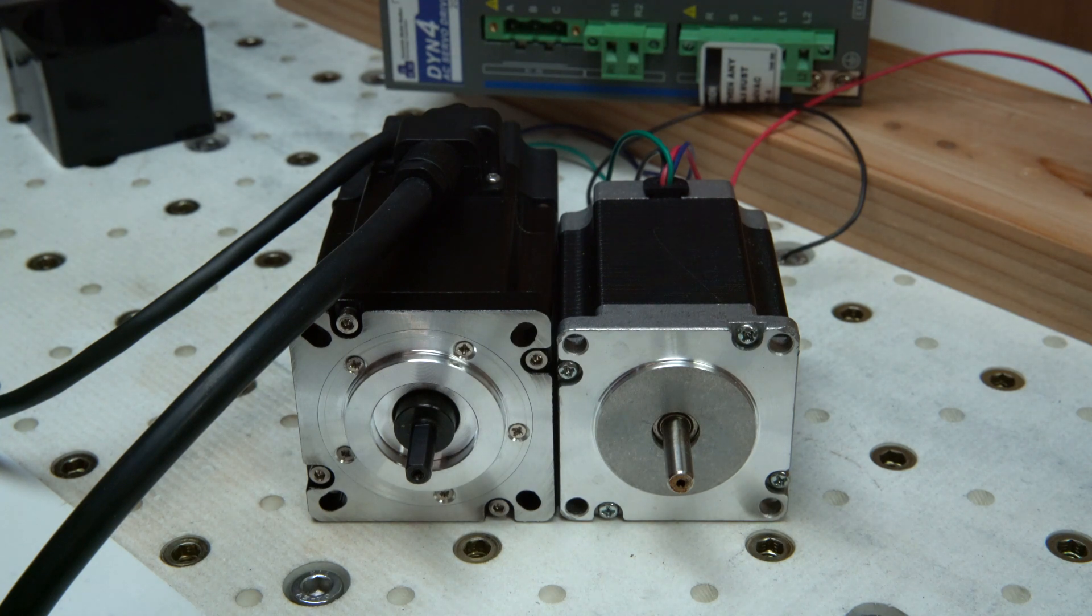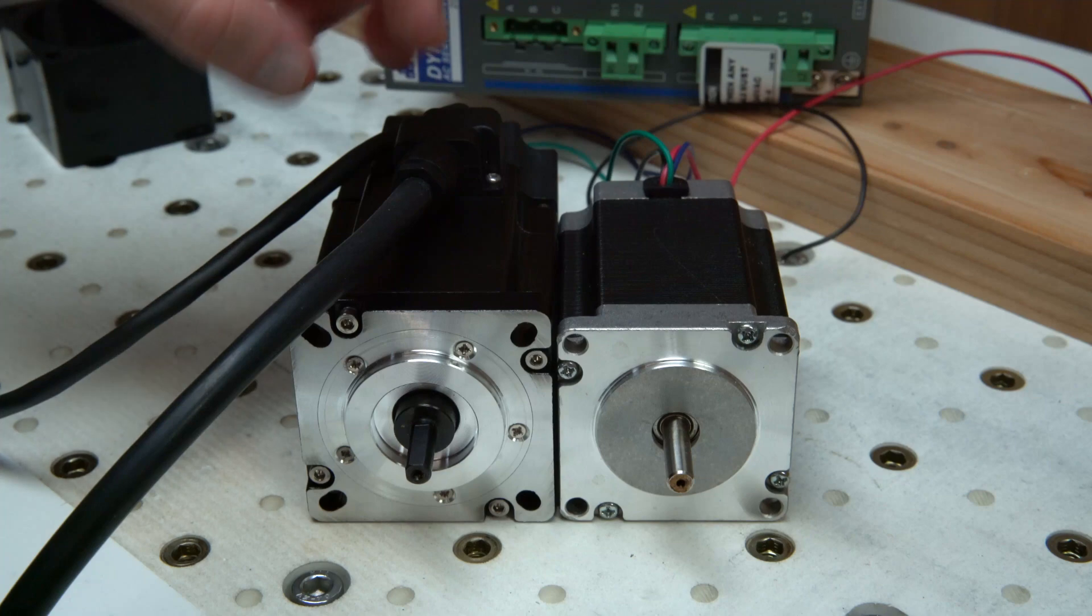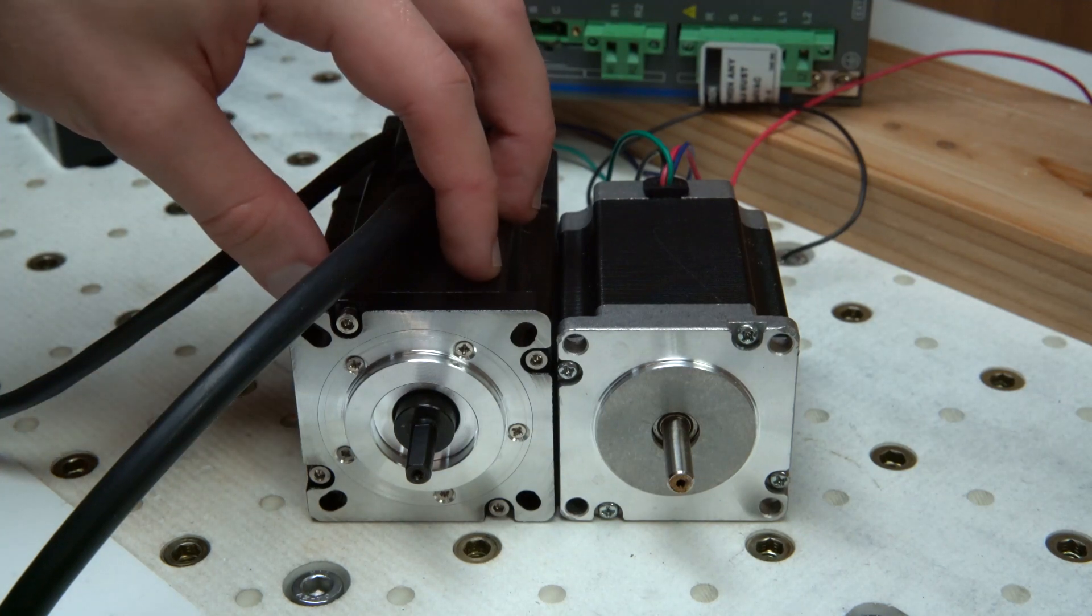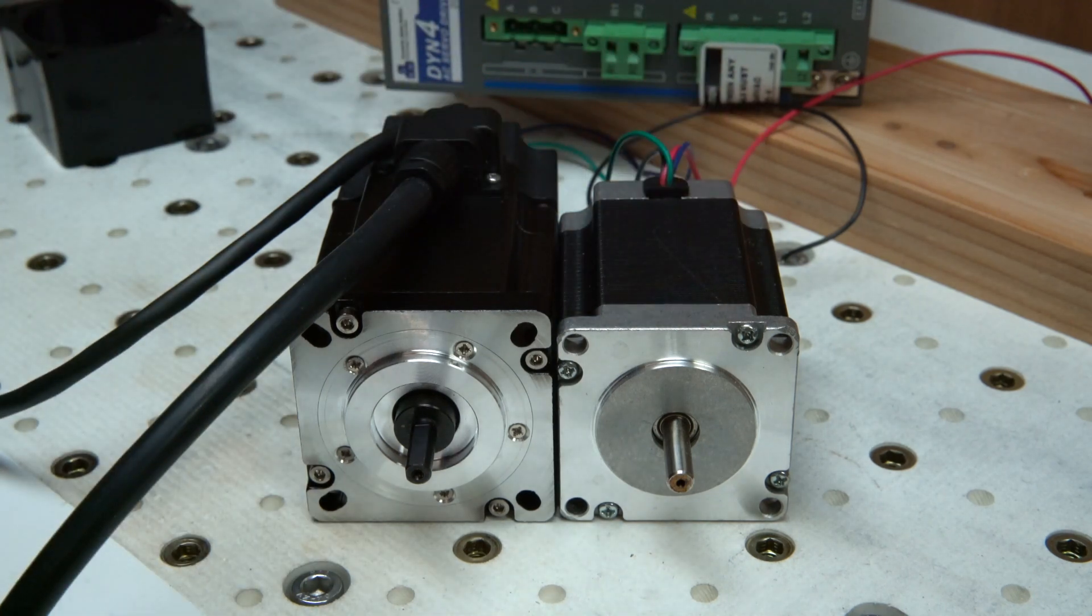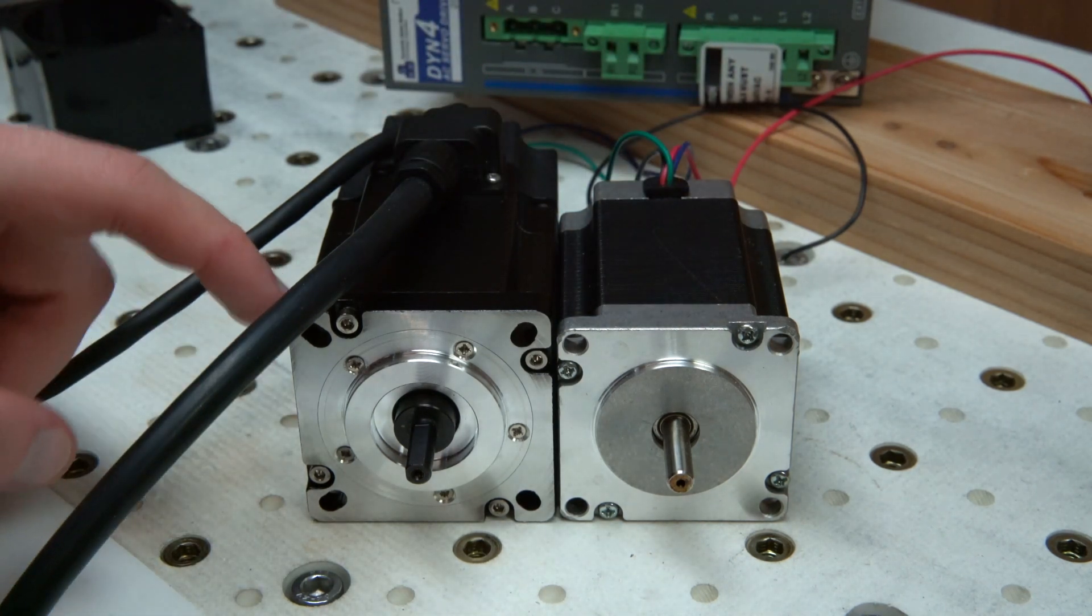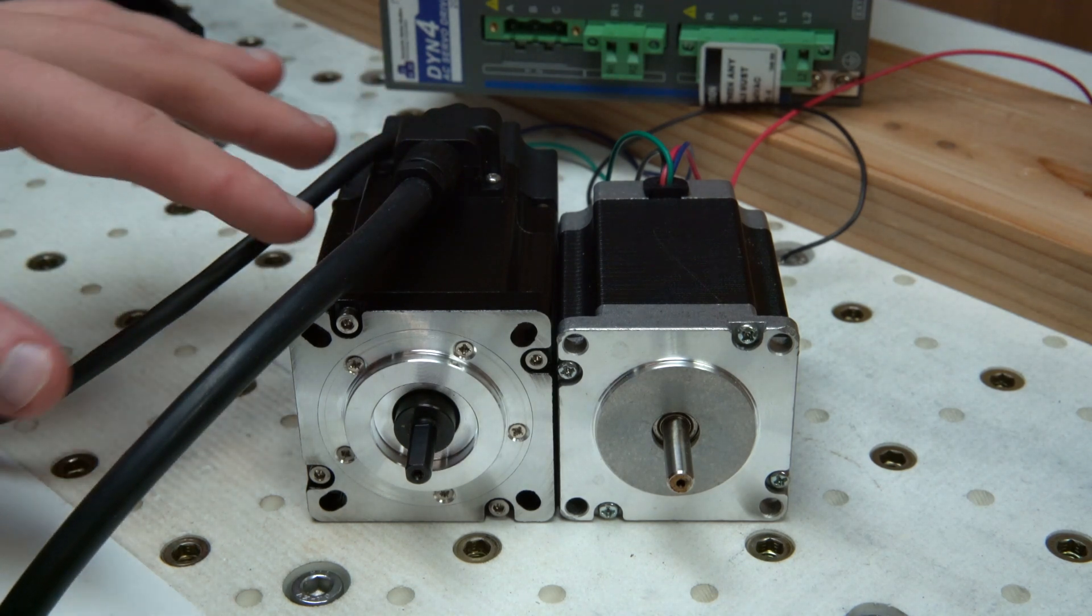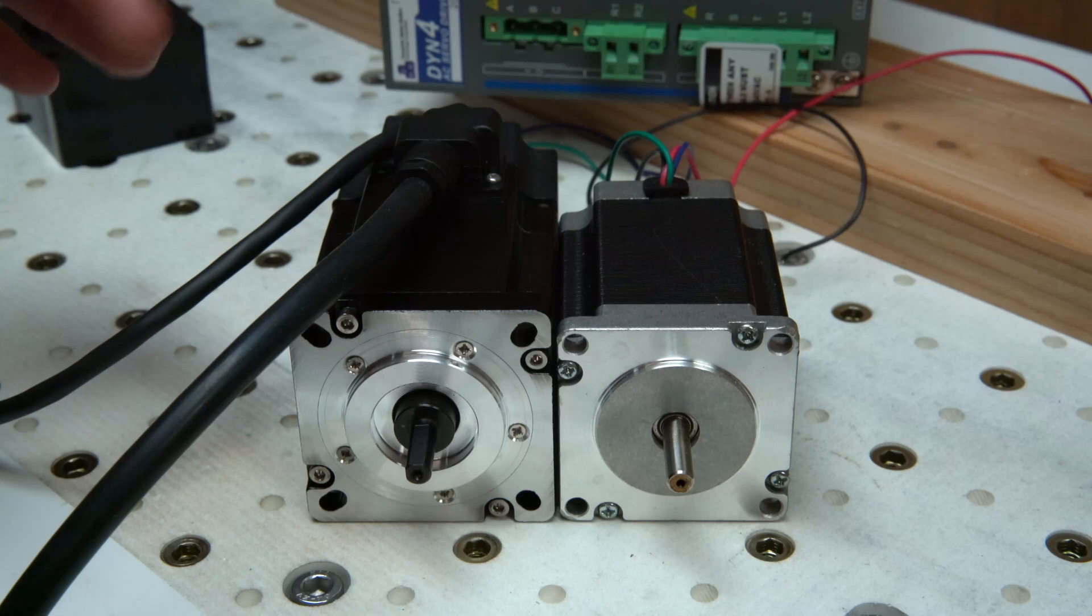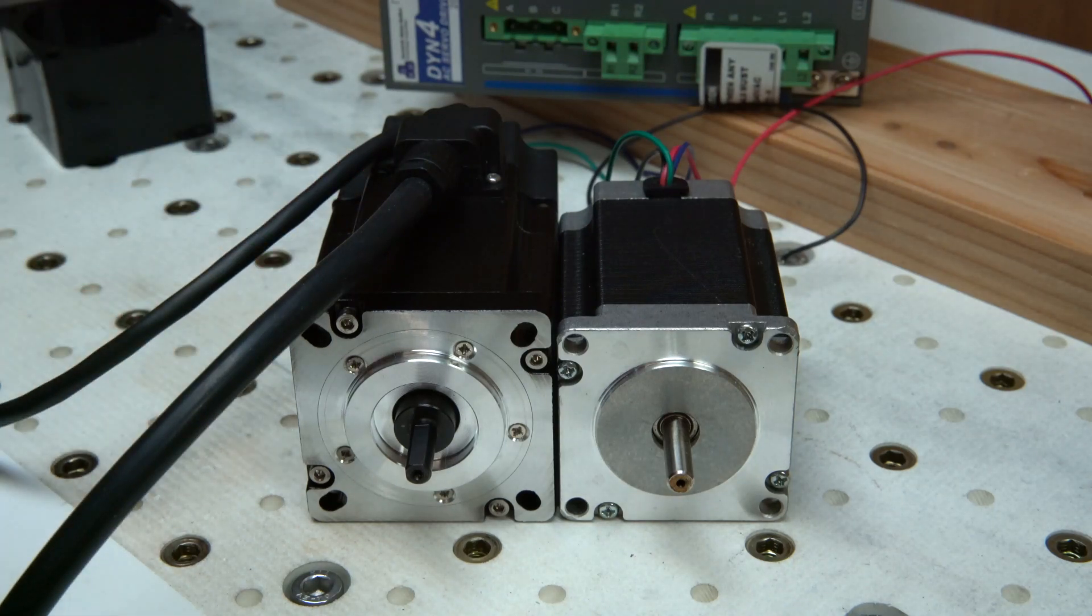So this is the 57N, their supposedly NEMA 23 frame size, and here we have a generic NEMA 23 stepper motor. You can see right away that the DMM motor is a little bit bigger. It's actually the very common 60-millimeter or NEMA 24 frame size 400-watt AC servomotor, but they've modified the front plate to try to make it as NEMA 23 as they could.